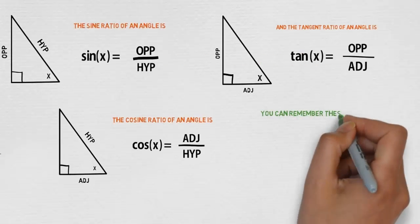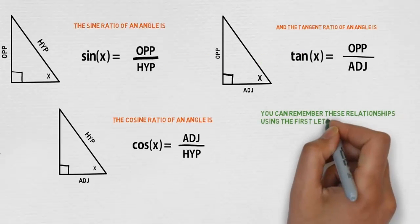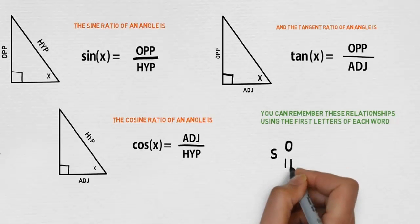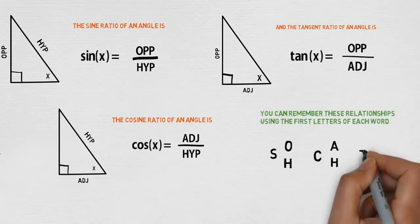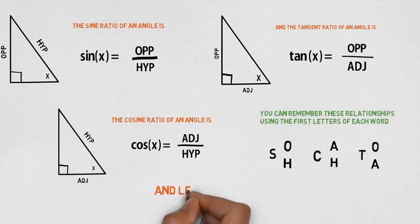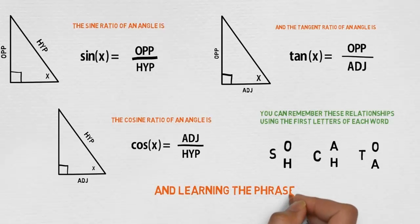You can remember these relationships using the first letters of each word, S-O-H-C-A-H-T-O-A, and learning the phrase SOHCAHTOA.